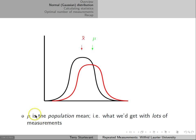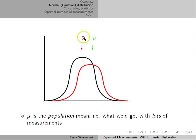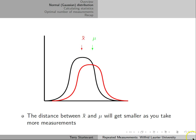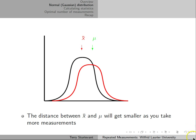Mu is the Greek letter that represents the population mean. If we could take as many measurements as possible, that's the average that we'd get. It will be somewhat different than our sample average of X-bar. As you take more and more measurements, these two will get closer, because X-bar will be a sample from more and more of the mean.